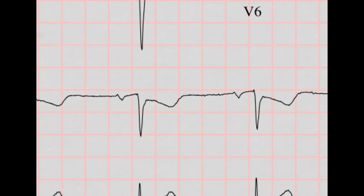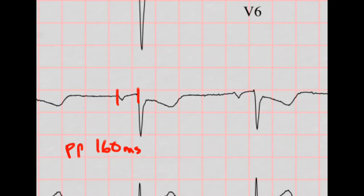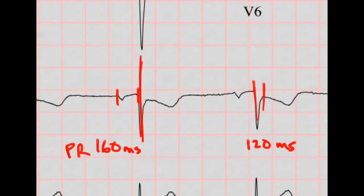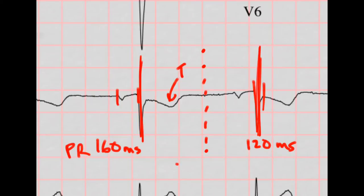Now let's do our intervals. The PR is about four small boxes, so that's about 160 milliseconds — that is normal for the PR. The QRS is about two to three small boxes, so about 100 to 120 milliseconds. Finally, let's do our QTc using the bisection method — drawing thick lines through the start and end of the QT, with a dotted line in the middle. The T wave is on the correct side of the bisection, so we'll say the QTc is normal.